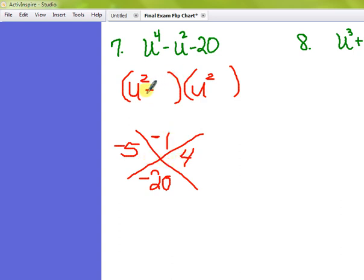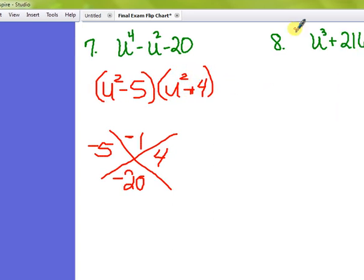So the order doesn't matter. This will be minus 5 plus 4. However, do not be tempted to factor this. It is not factorable because it's not the difference of two perfect squares, it is the sum. It doesn't work.